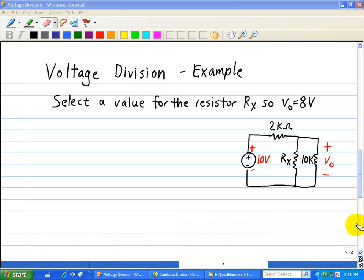Let's apply this voltage division concept with this example. Here we want to select the value of the resistor Rx so that the output voltage across this parallel combination of resistors is equal to 8 volts.